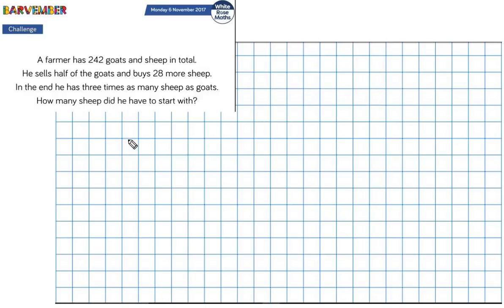A farmer has 242 goats and sheep in total. He sells half of the goats and buys 28 more sheep. In the end, he has three times as many sheep as goats. And the question is, how many sheep did he have to start with?